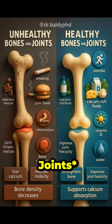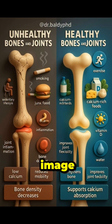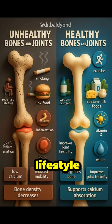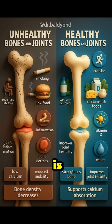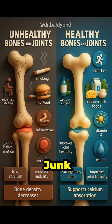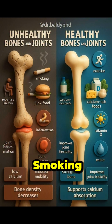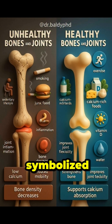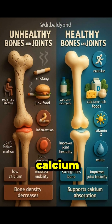Unhealthy bones and joints: the left side of the image illustrates the negative effects of an unhealthy lifestyle on bones and joints. A sedentary lifestyle is depicted as a person sitting on a chair, junk food is represented by a hamburger and fries, smoking is shown as a lit cigarette, and inflammation is symbolized by a red swollen joint.